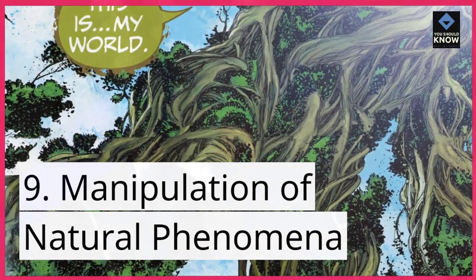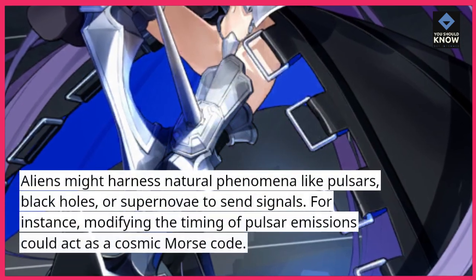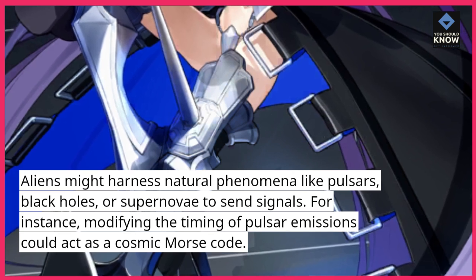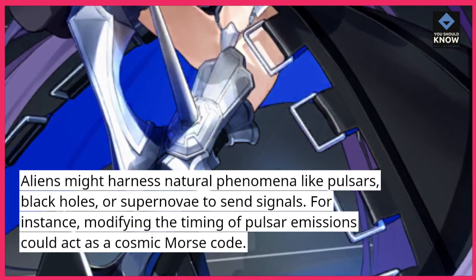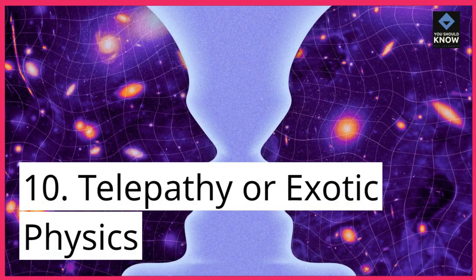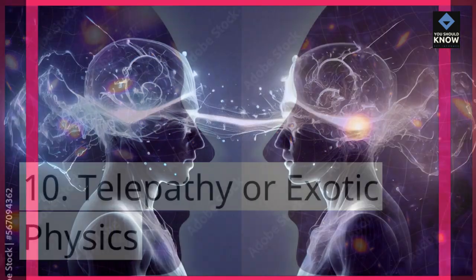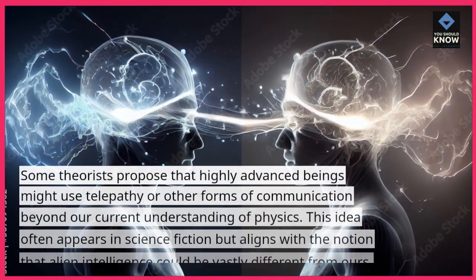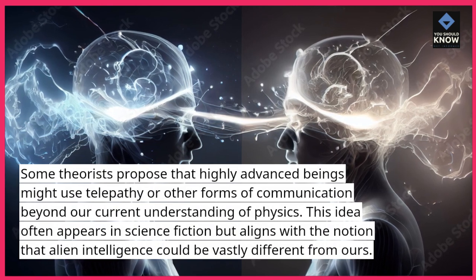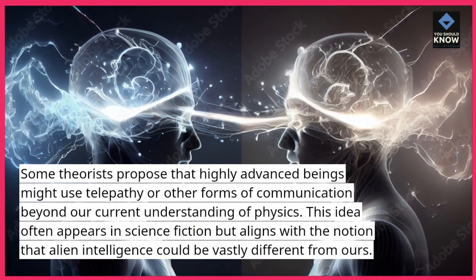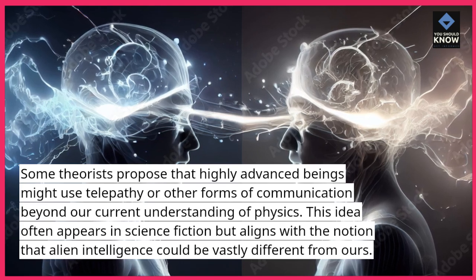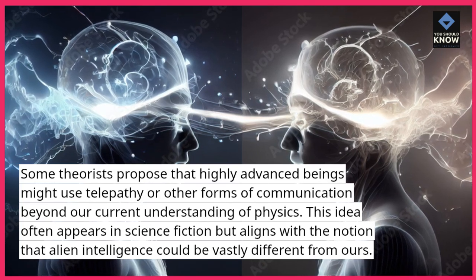Manipulation of Natural Phenomena: Aliens might harness natural phenomena like pulsars, black holes, or supernovae to send signals. For instance, modifying the timing of pulsar emissions could act as a cosmic morse code. Telepathy or Exotic Physics: Some theorists propose that highly advanced beings might use telepathy or other forms of communication beyond our current understanding of physics. This idea often appears in science fiction but aligns with the notion that alien intelligence could be vastly different from ours.